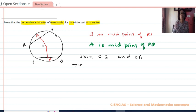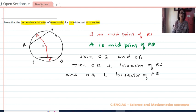Then OB is perpendicular bisector of RS and OA is perpendicular bisector of PQ according to the theorem.